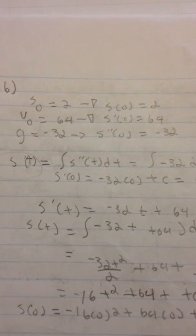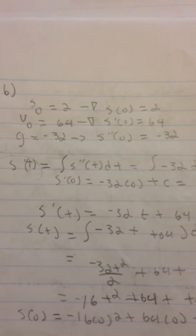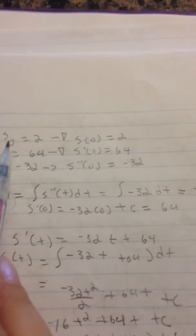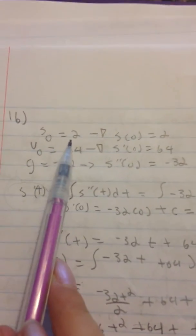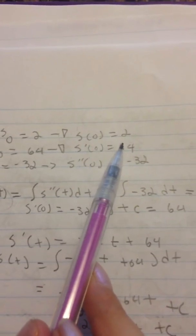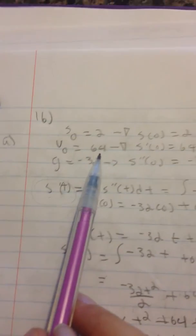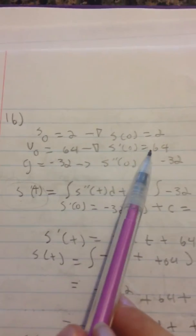Part A says find the position function giving the height S as a function of time T. So over here I have S naught equals 2, which goes to S of 0 equals 2. V naught equals 64, which goes to S prime of 0 equals 64.